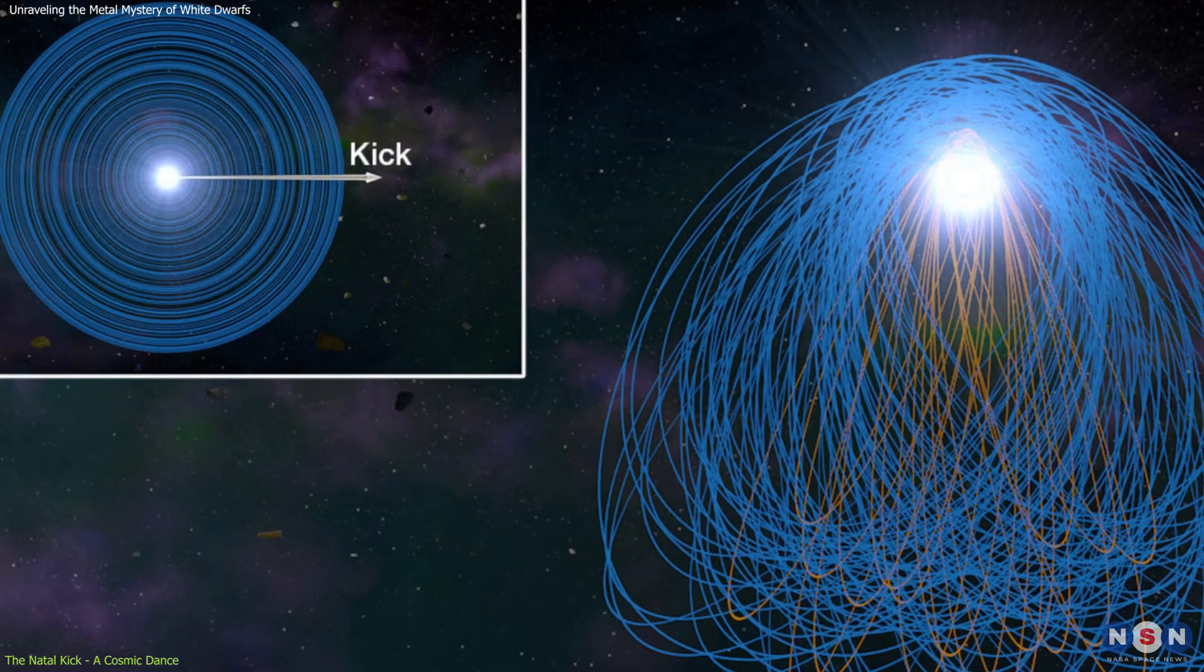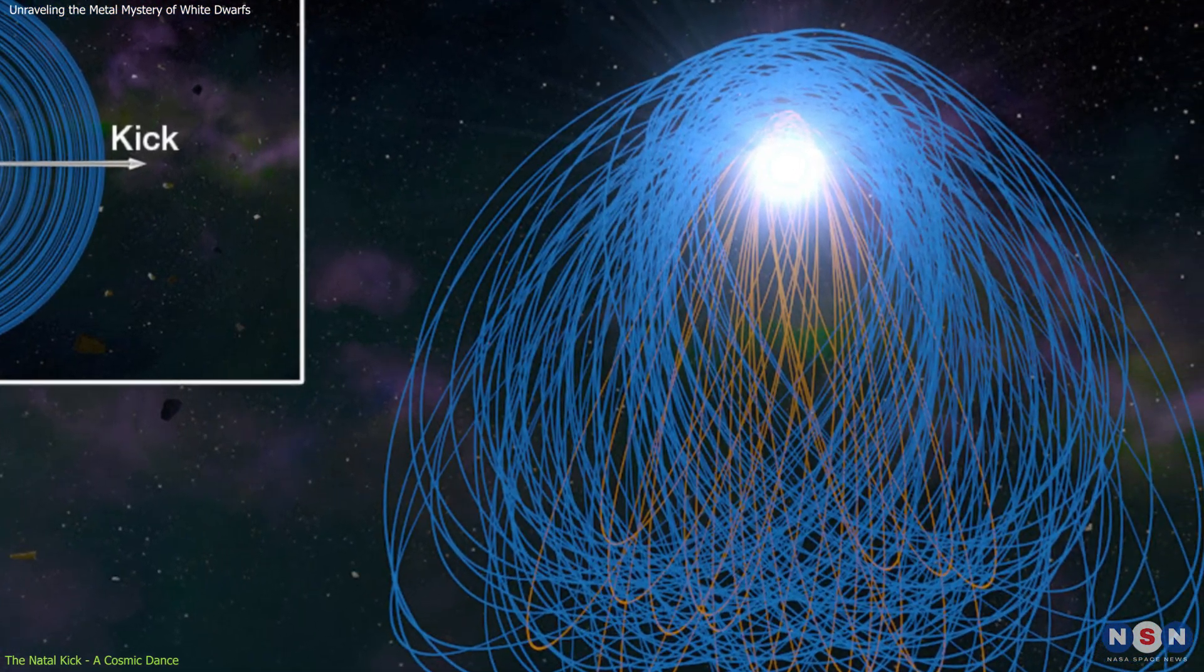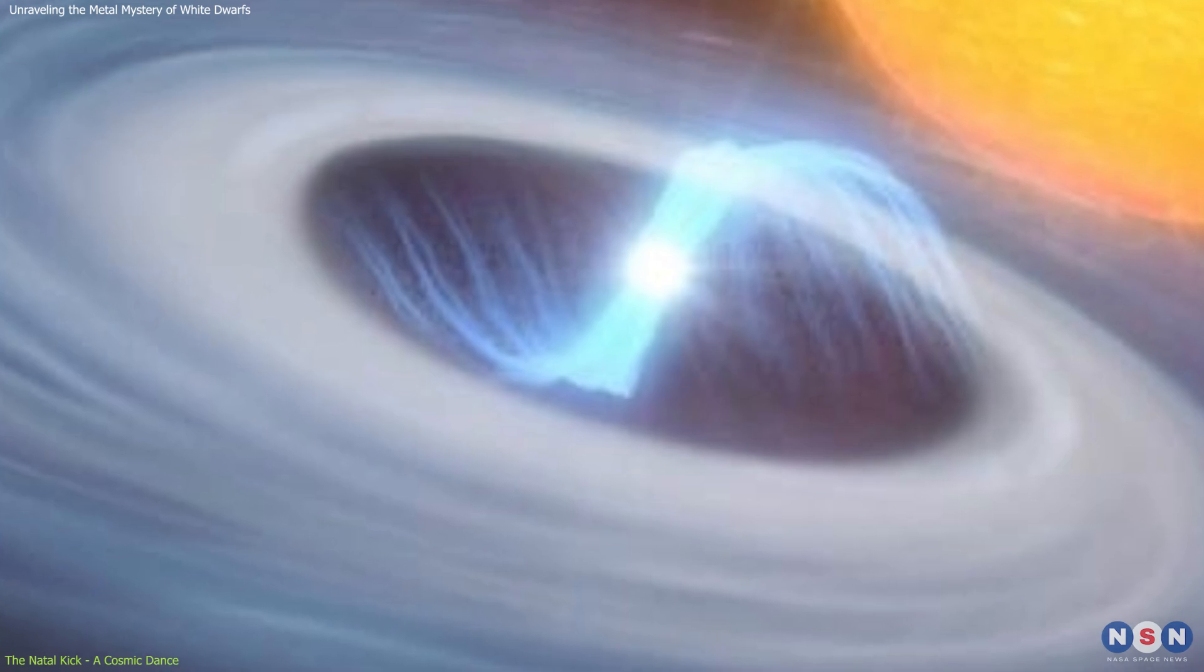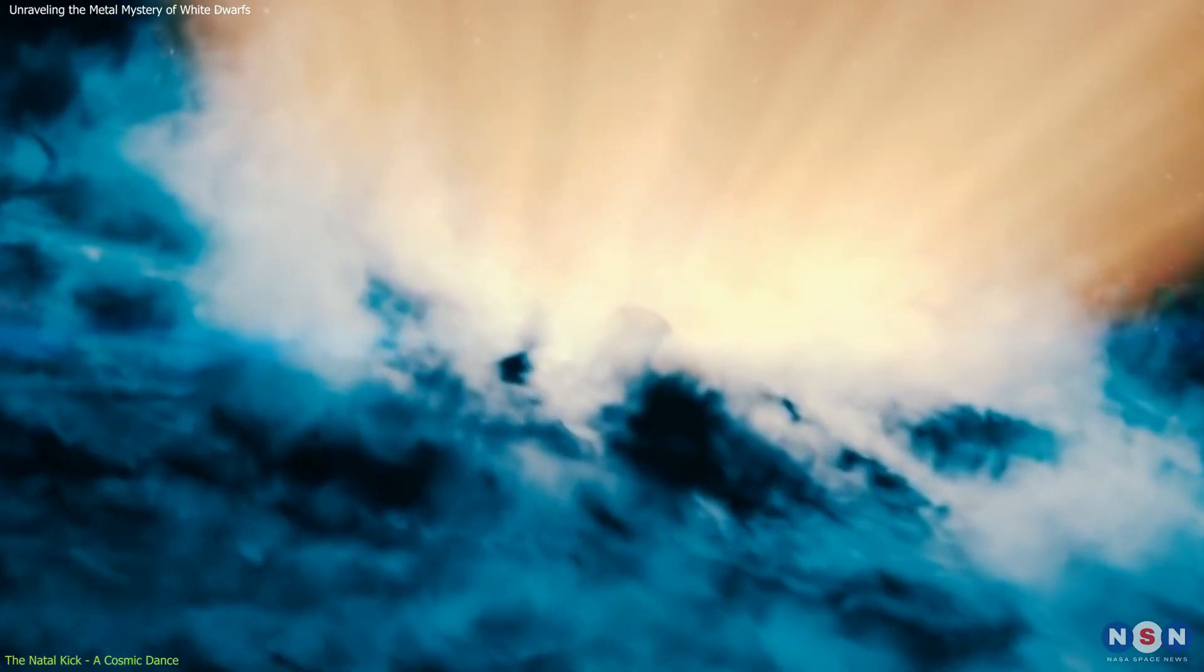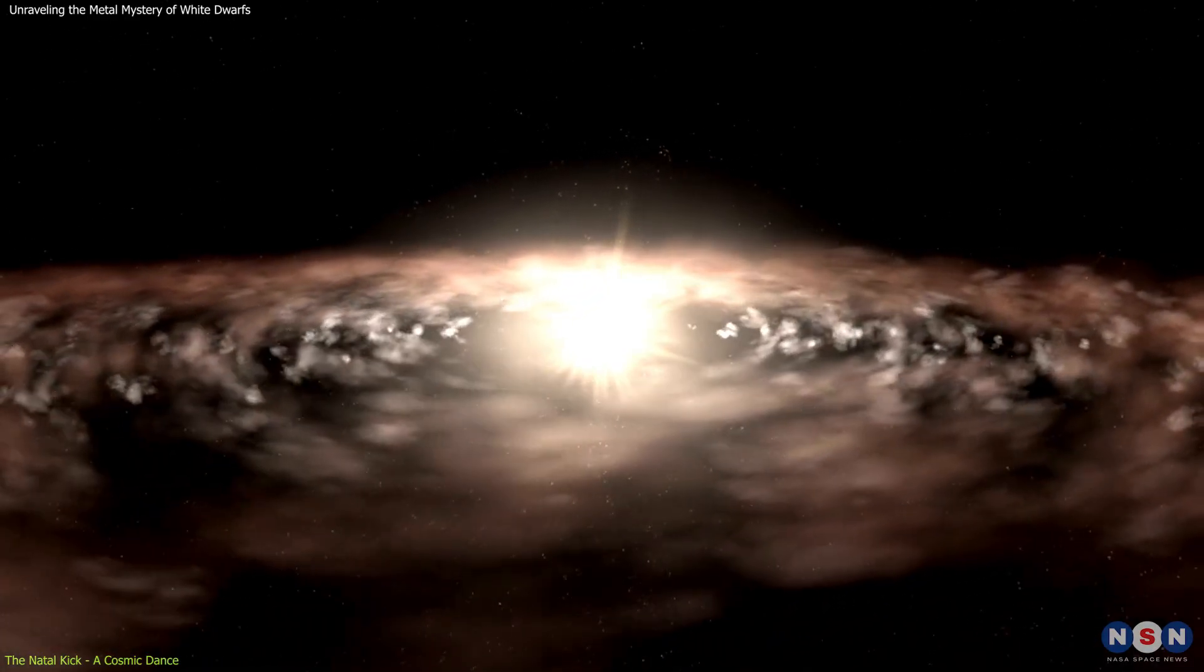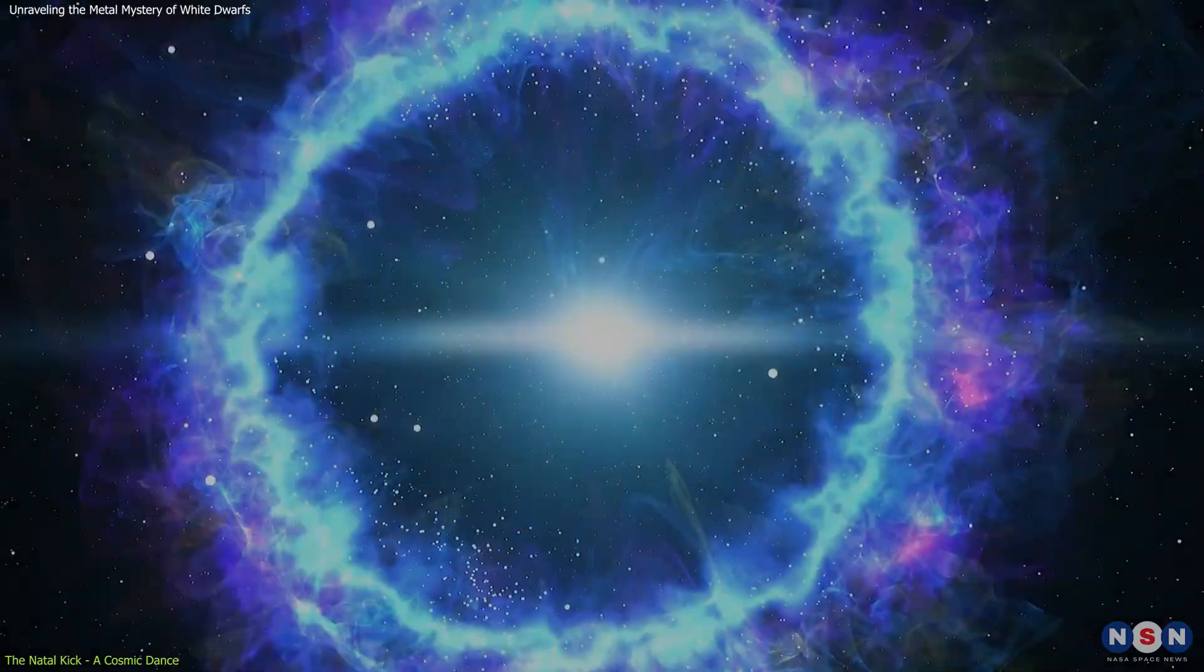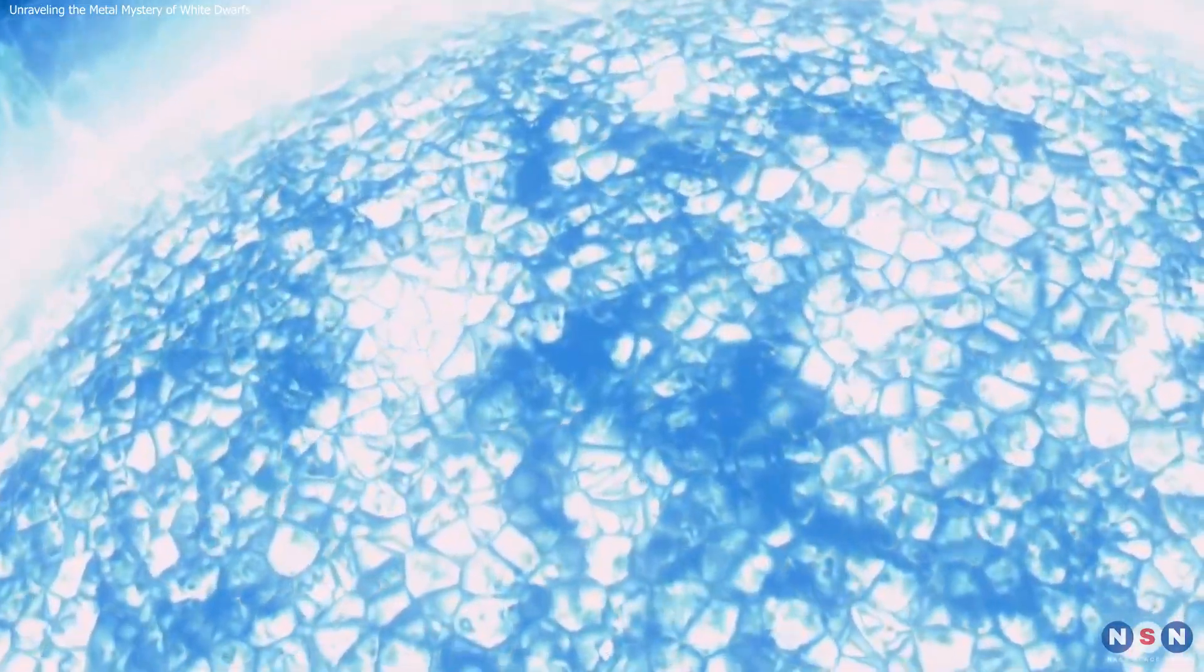The longevity of changes caused by the natal kick in white dwarfs is particularly compelling, as these altered orbits can result in accretion events lasting hundreds of millions of years. The mechanics of accretion are equally intriguing. As disrupted material spirals toward a white dwarf, it undergoes intense heating and compression, transforming from solid to plasma before being integrated into the white dwarf's atmosphere, which enriches it with heavy elements.